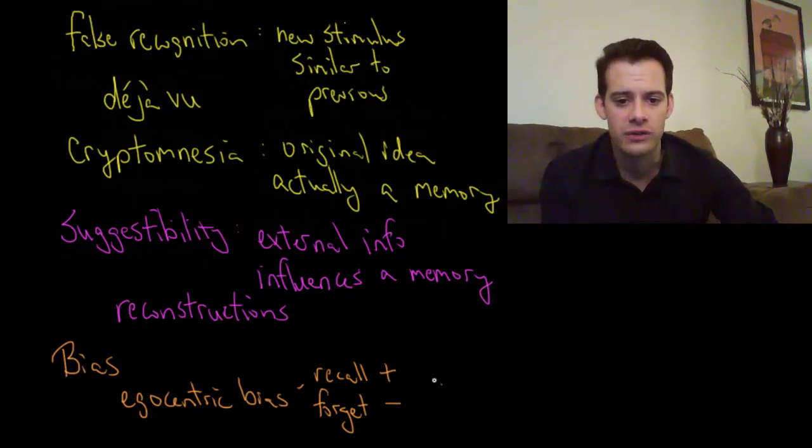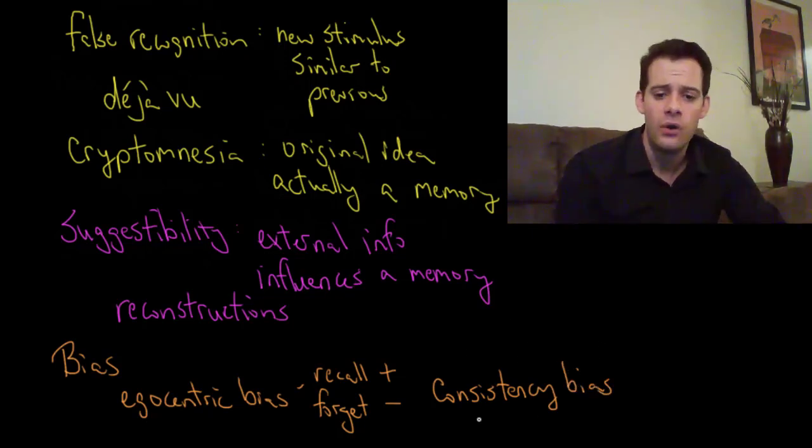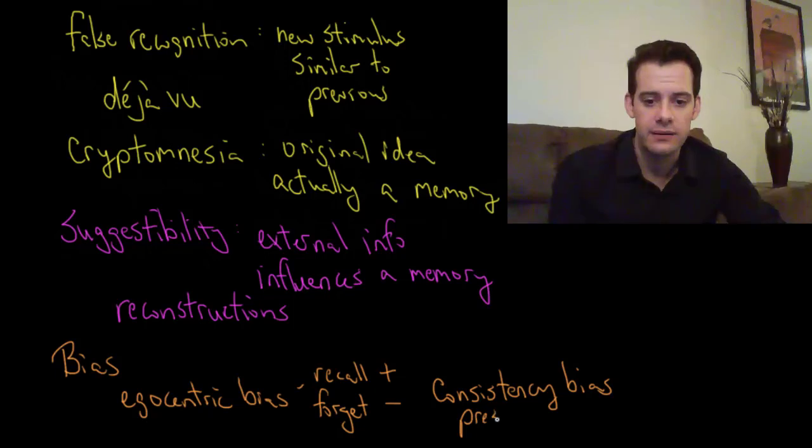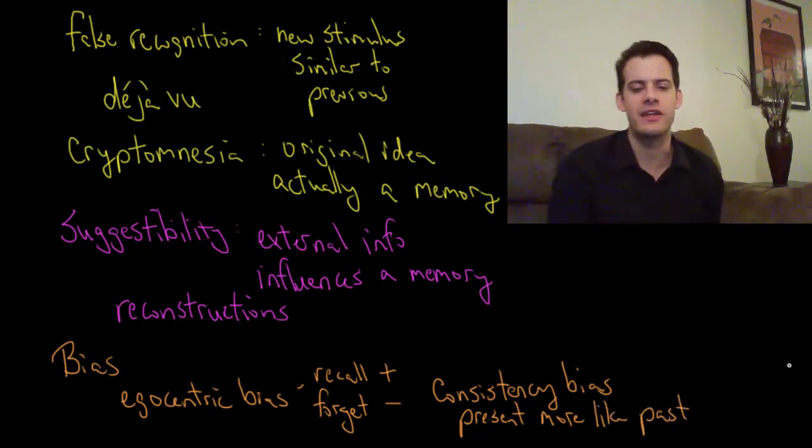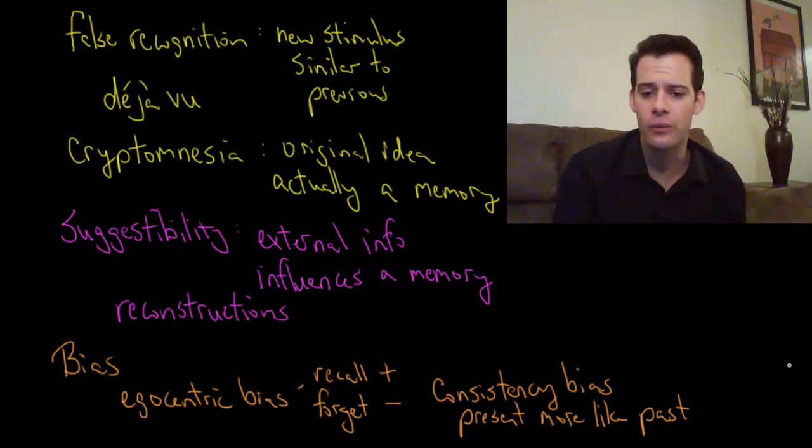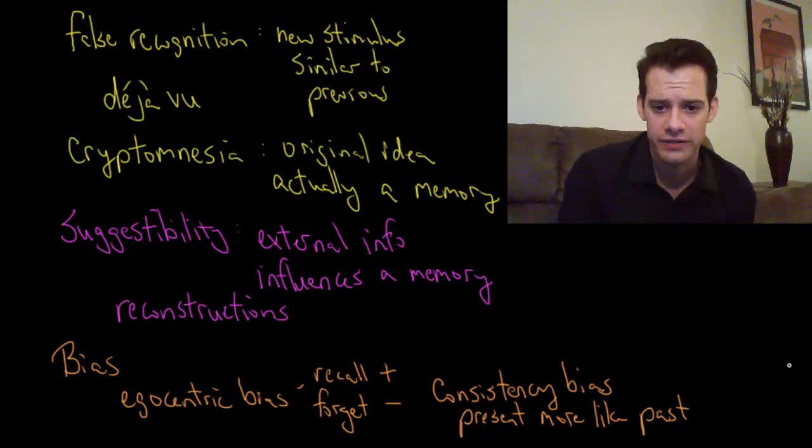And we also have consistency bias. And consistency bias is the idea that we tend to think that we're more consistent than we actually are. In other words, we think our present is more like our past than it actually is. So we tend to think that the way that we think now, the views that we have, we tend to think we've been consistent all along. We don't recognize how much that has changed over time. You might think, oh yeah, I pretty much always thought this way. Or I pretty much always had this opinion. When in fact you probably didn't but you tend to remember it that way.